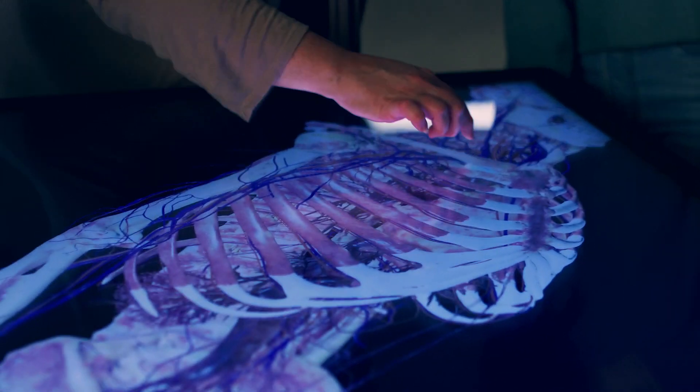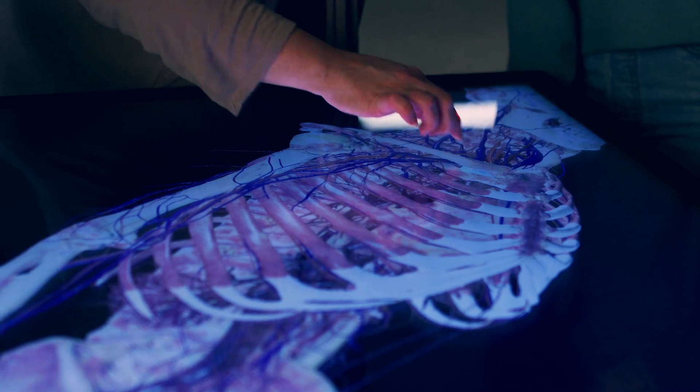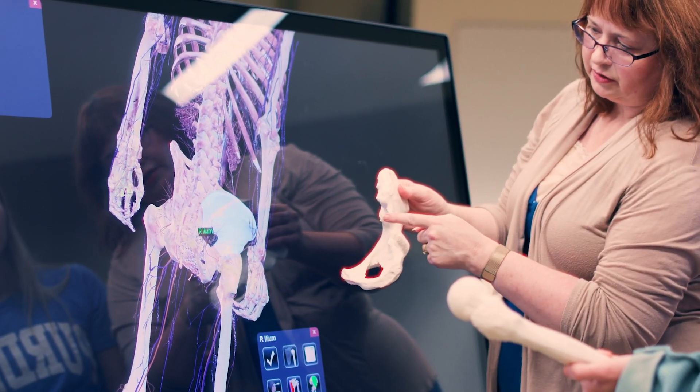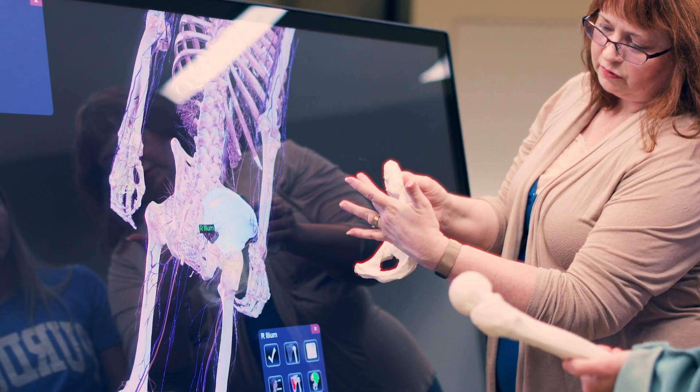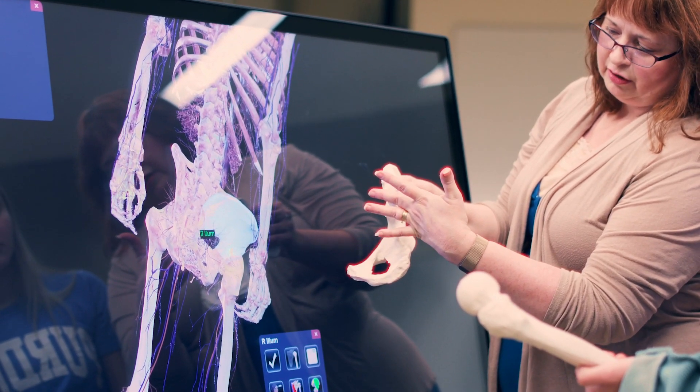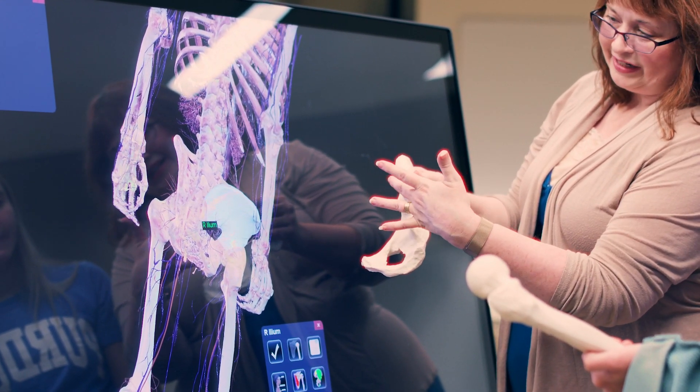You can remove skin, any layer, take muscles off, take away the vasculature, or make the muscles see-through so that you can see their orientation and relationship to the bone beneath.